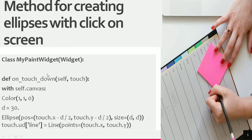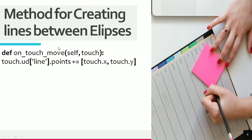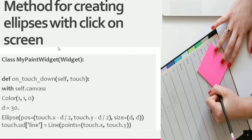Now let's look at the method for creating lines between the ellipses. We create another method called on_touch_move, which is the method name, and we provide self and touch, just as we did for the on_touch_down method.